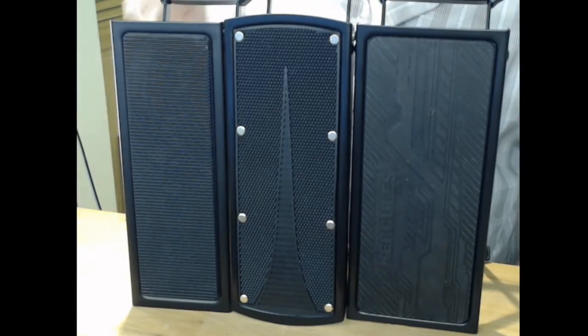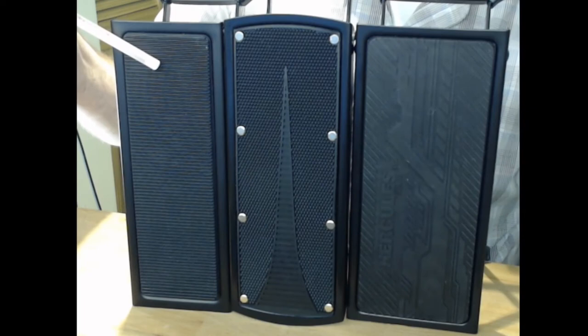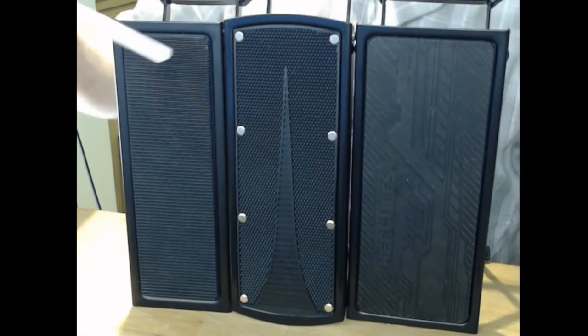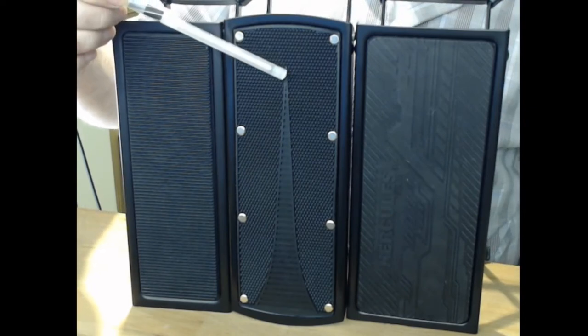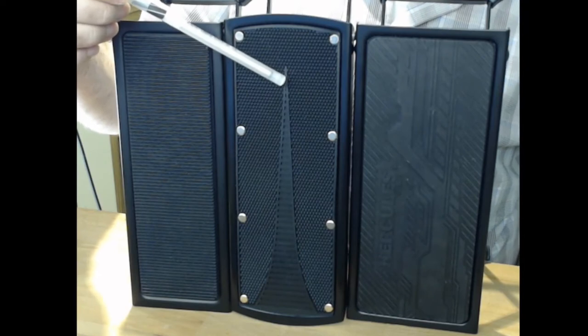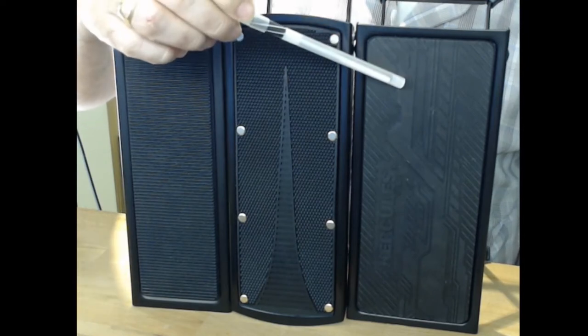Okay, so there you have it. We have three different types of footstools, basically. The onstage stands is the most compact. You have this one, which is the Tetra Technica or the Wingo, and then you have the Hercules.